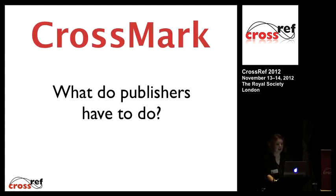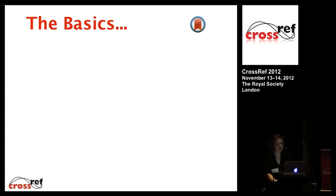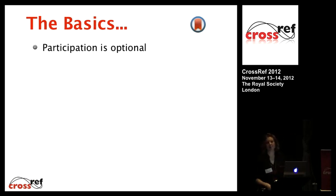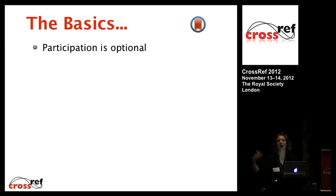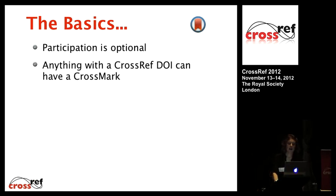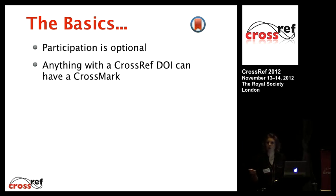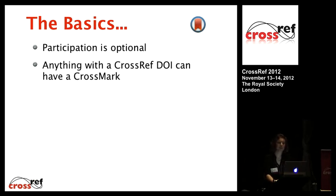Because this is the technical day I want to run through what you actually need to do to implement Crossmark. First: participation is optional. It's a bit like CrossCheck in that respect — you need to be a Crossref member in good standing and then you can opt to take advantage of these additional services. Crossmarks can be assigned to anything with a Crossref DOI. Publishers are asking: do they want it on review articles, letters to the editor, or all article types? It is flexible, as long as you make that clear to your readers.